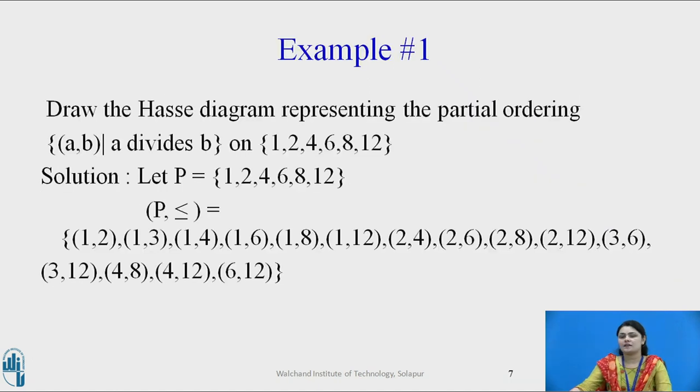Now let us see example. So draw the Hasse diagram representing the partial ordering. And the question is (a,b) in a set such that a divides b on 1, 2, 4, 6, 8, 12.